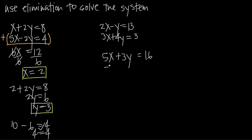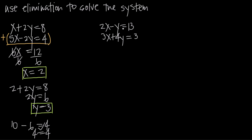If we did subtraction, we'd get 2x minus 3x or negative x, y minus 4y or negative 5y, and 13 minus 3 or 10. So whether we do addition or subtraction, no variable is eliminated, which means we need to do something different. We're going to manipulate one of the equations so that a variable will be eliminated when we add or subtract. The easiest way is to multiply the first equation by 4, because that gives us a negative 4y, and we already have a positive 4y in the second equation, so they'll cancel when we add. Alternatively, we could multiply the first equation by 3 to get 6x and the second by 2 to get 6x, then subtract to eliminate x. But the easiest approach is to multiply the first equation by 4.